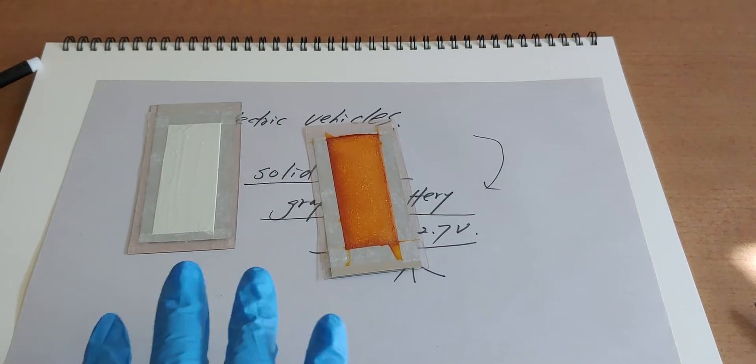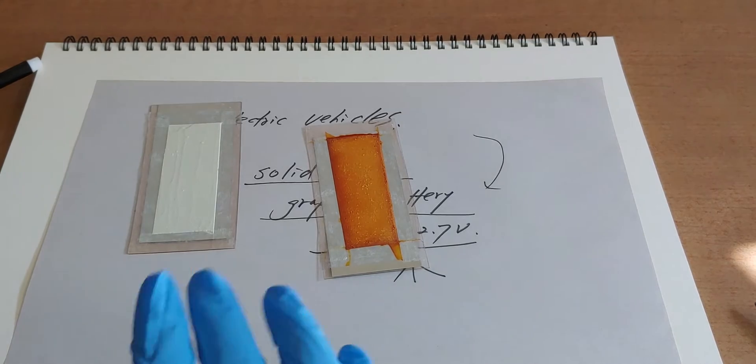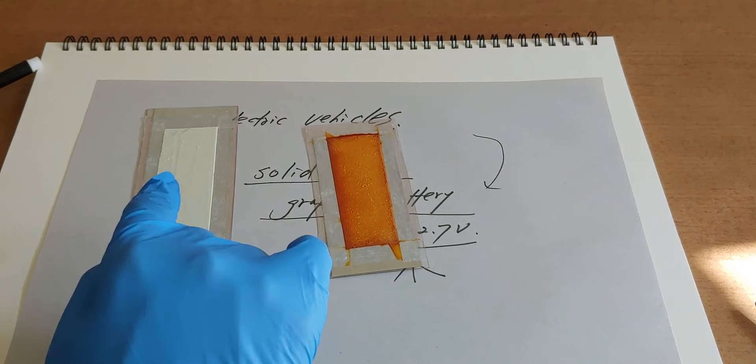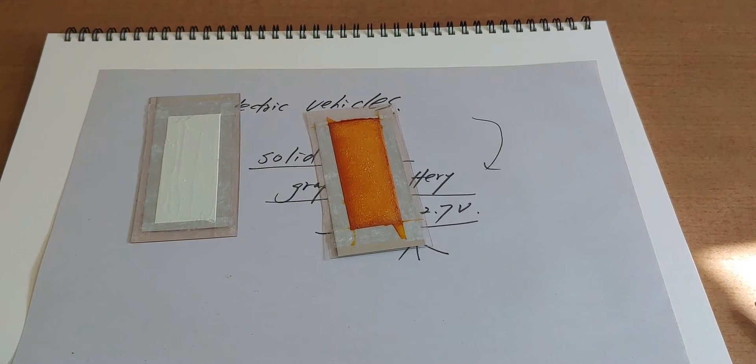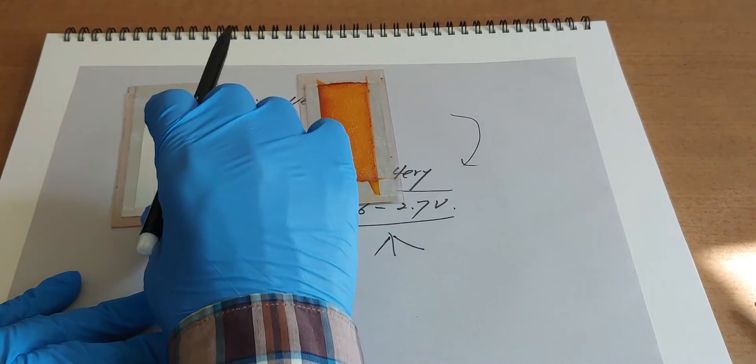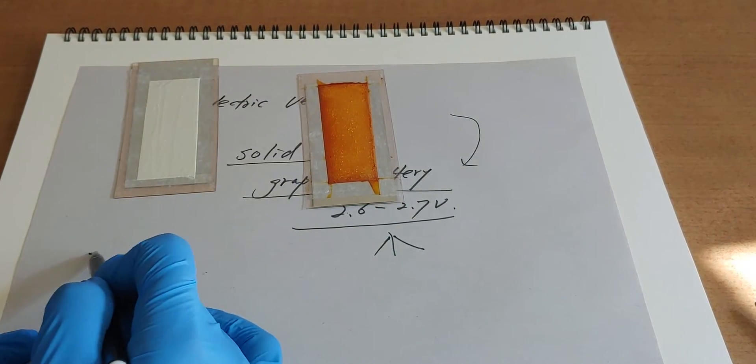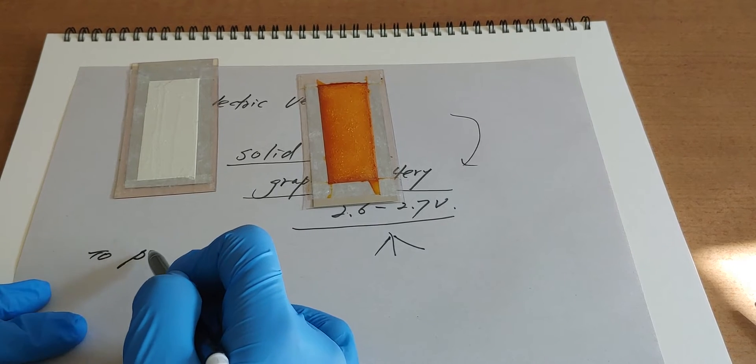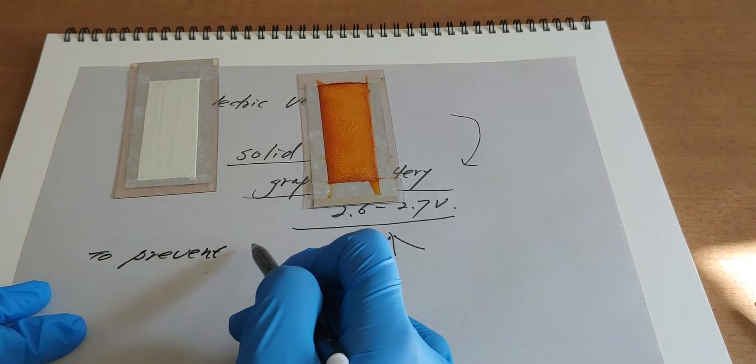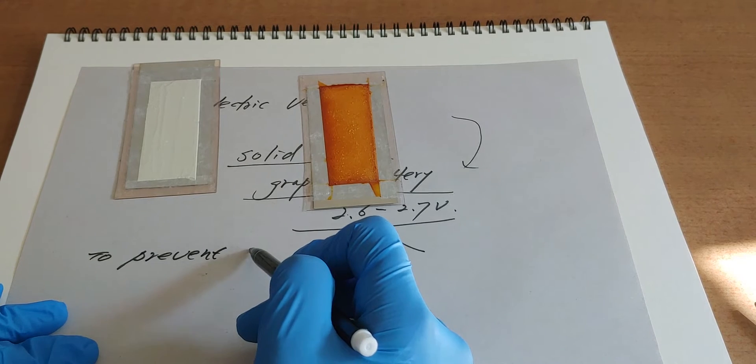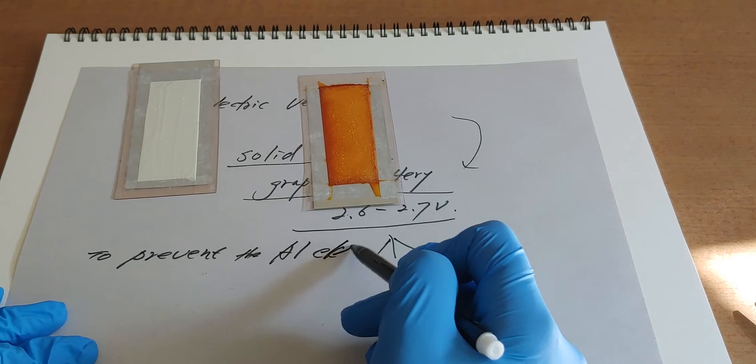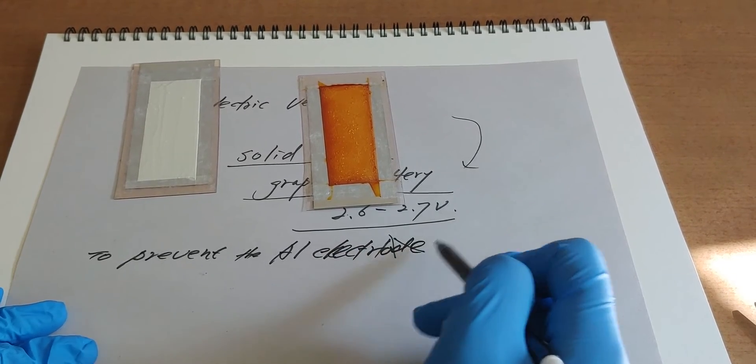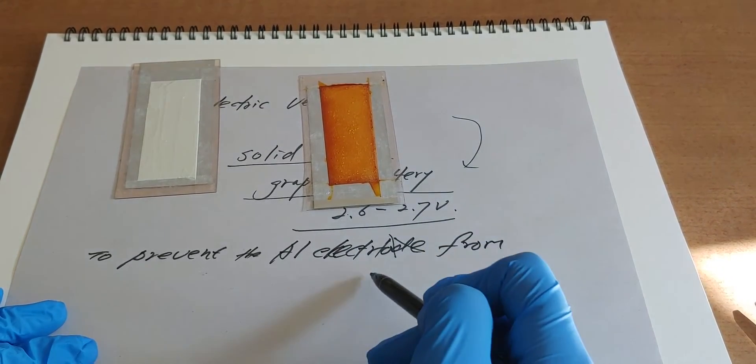The aluminum electrode is now being prepared. This material, can you see that, is to prevent the aluminum electrode from corrosion.